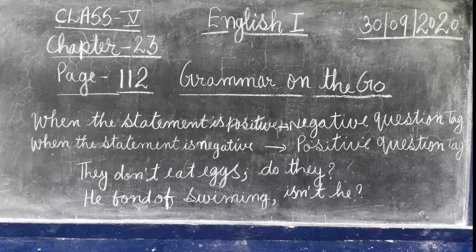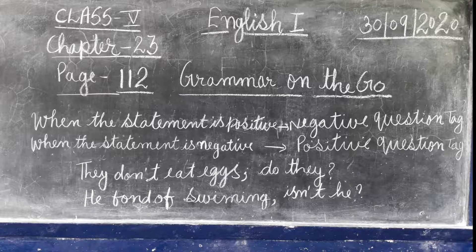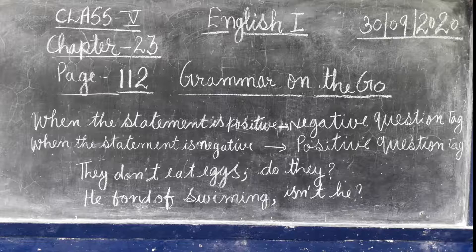'Many' means a large number of something. It is used with countable nouns — things you can count. For example: 'There are many stars in the sky.' 'Many boys are playing in the field.' If you start counting, you can tell how many boys there are.